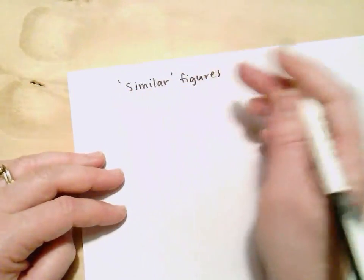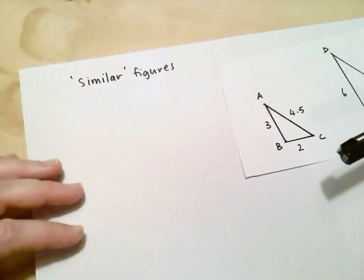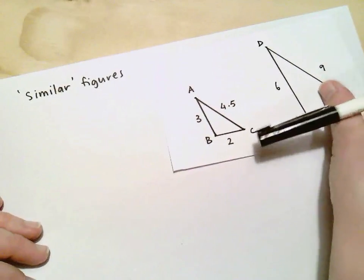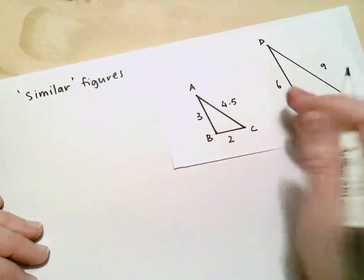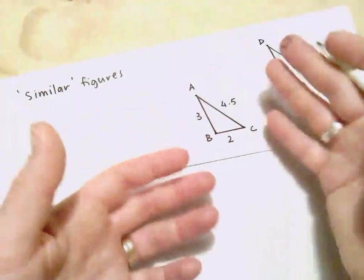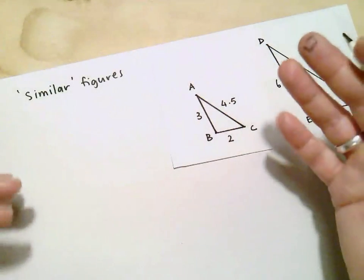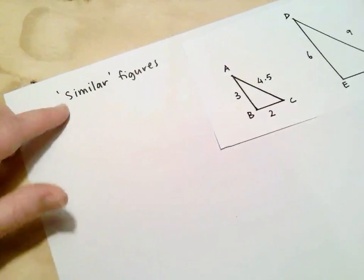First of all we need to ask ourselves what do we mean by similar figures? And it's got a very precise meaning in mathematics. You can see that these two triangles that I've got here look like they're similar. So they look like they're a similar shape but obviously a different size. But we've got to really have a very precise definition around this term similar.